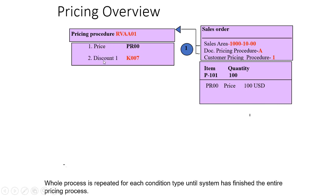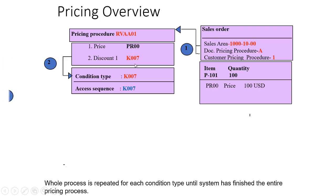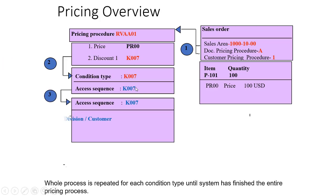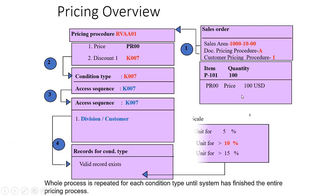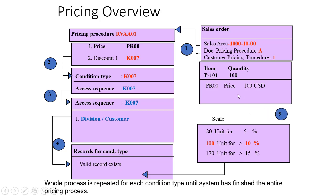The next condition type is K007. For this one, the system tries to access its access sequence tables, finds the valid condition record, and applies it. Like that, the cycle of the condition technique executes until it finds the last condition type of the pricing procedure. This is the basic condition technique.